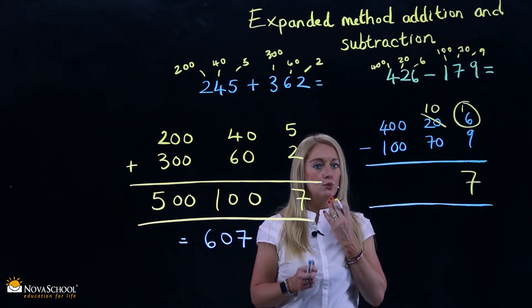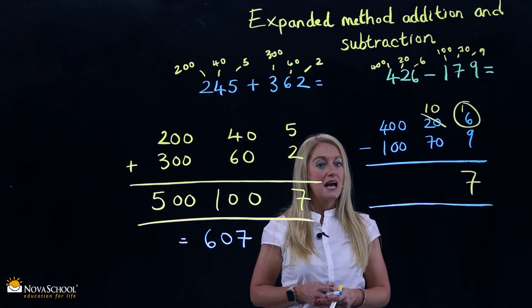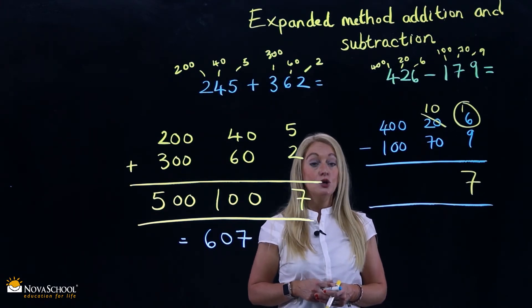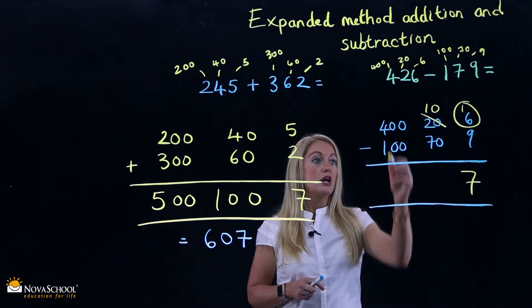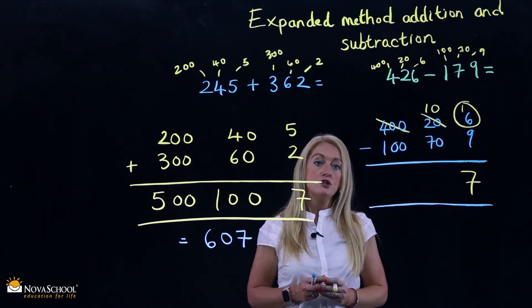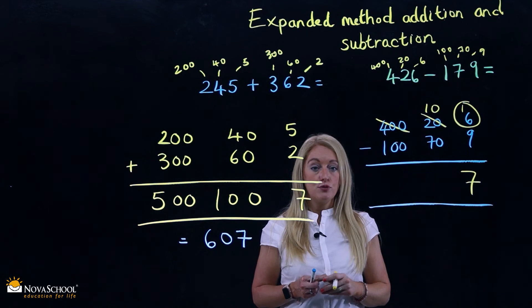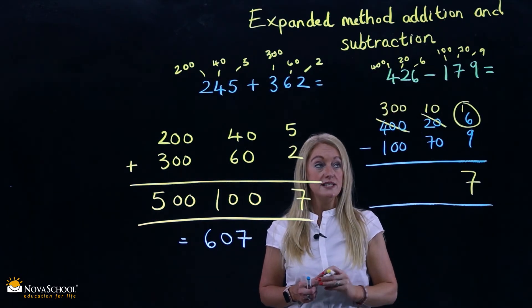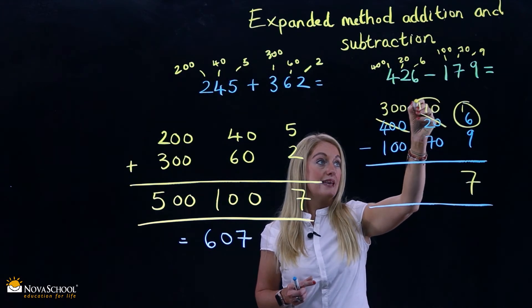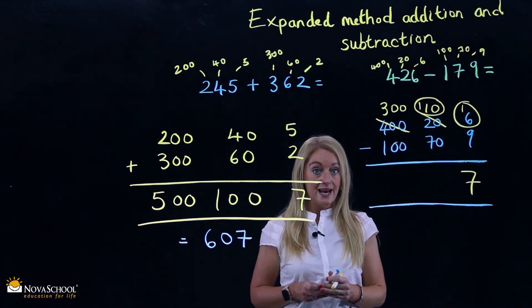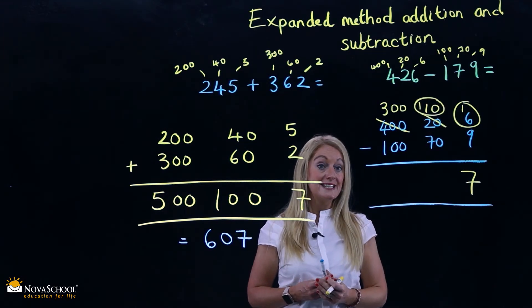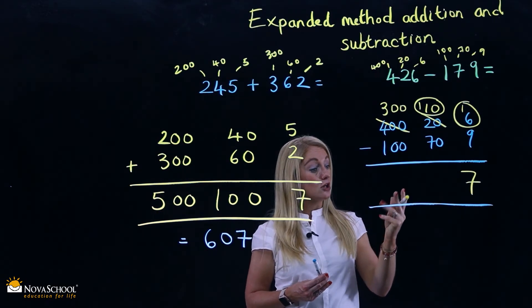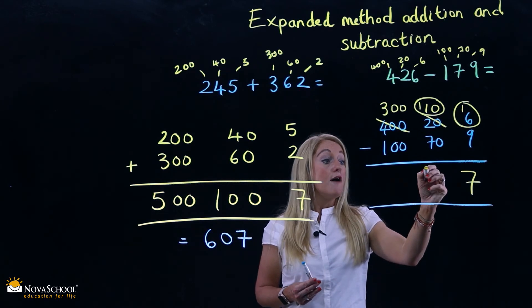Then we do, 10 subtract 70. No, we can't do that either, can we? So let's steal again. We need to steal a 100. We cross out the 400 and we make it 300. Then we add our 100 to the 10, and we make a new number. Now, 110 take away 70, if we count up, 80, 90, 100, 110, is 40.